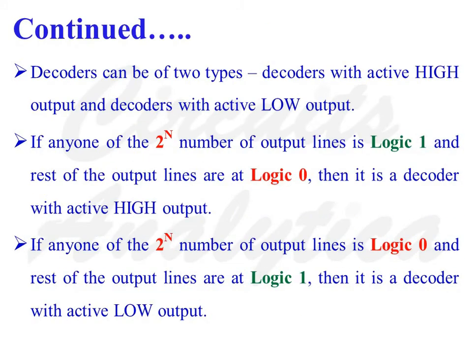Decoders can be of two types: decoders with active high output and decoders with active low output. For a decoder with active high output, any one of the 2 raised to n output lines is logic 1 and the rest are logic 0. On the other hand, if any one of the output lines is logic 0 and the rest are logic 1, then it is a decoder with active low output.